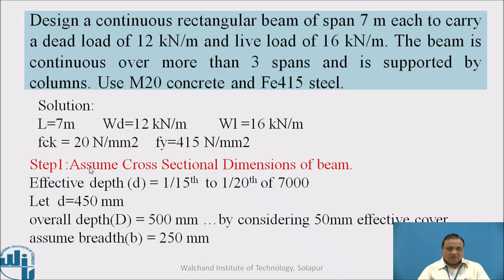First step: We have to assume the cross sectional dimensions of the beam based on the serviceability criteria, that is span to depth ratio. So effective depth is taken usually 1/15th to 1/20th of the span. Span is 7000 mm. Therefore, d will be 450 mm. The overall depth will be 500 mm by considering 50 mm effective cover. Assume breadth as 250 mm.